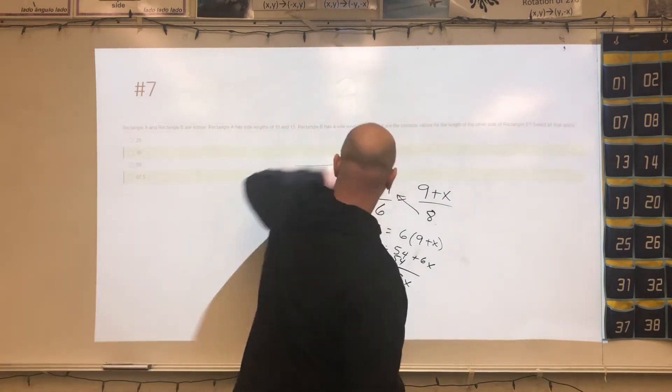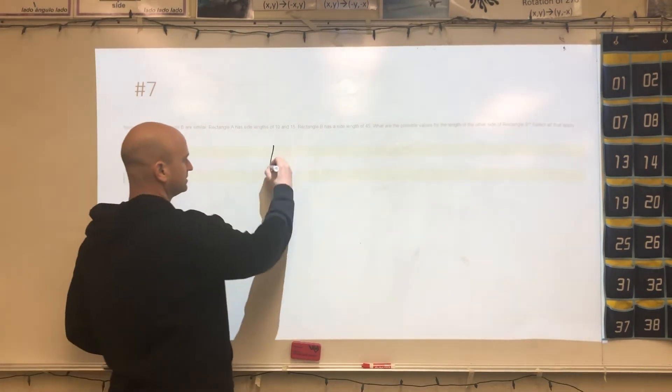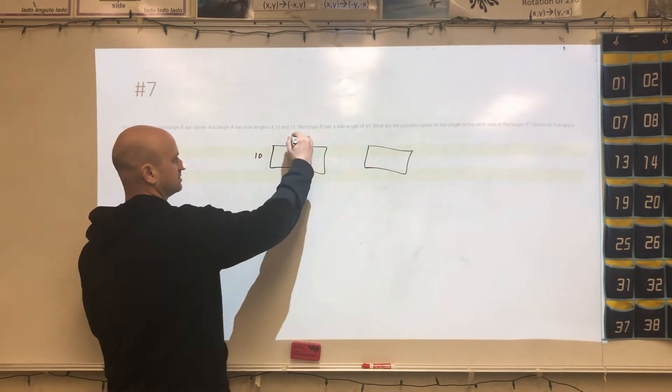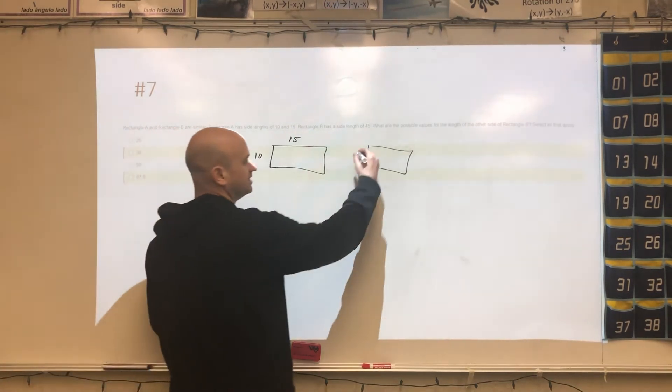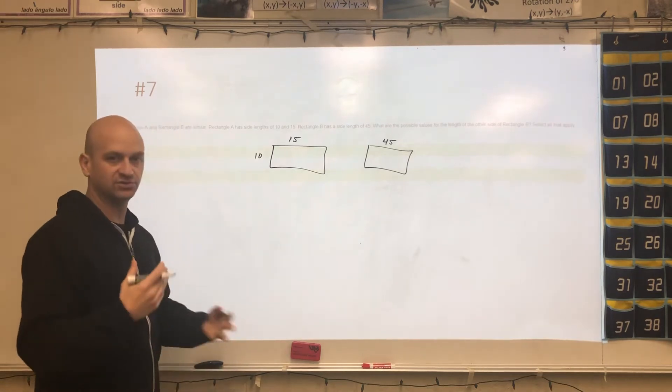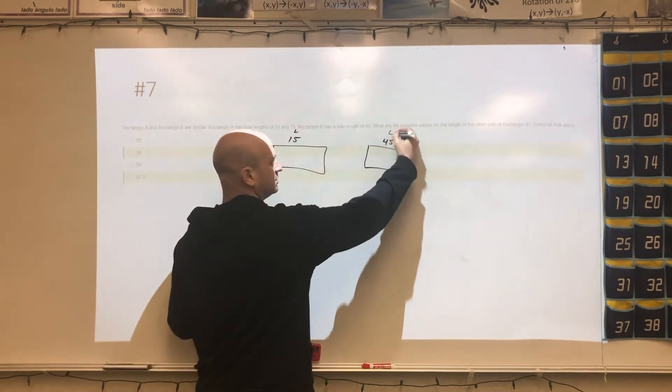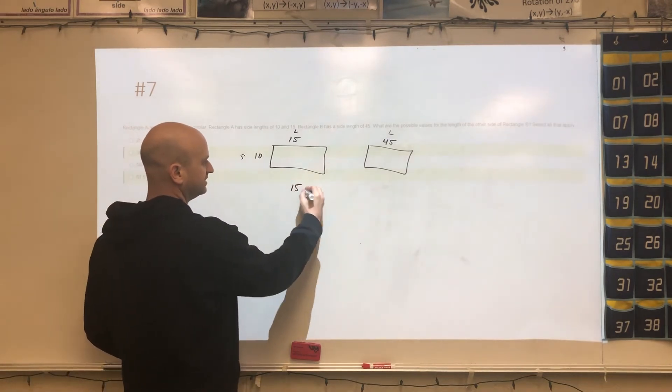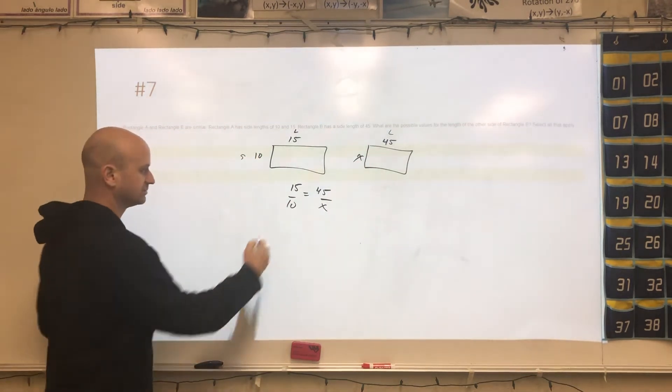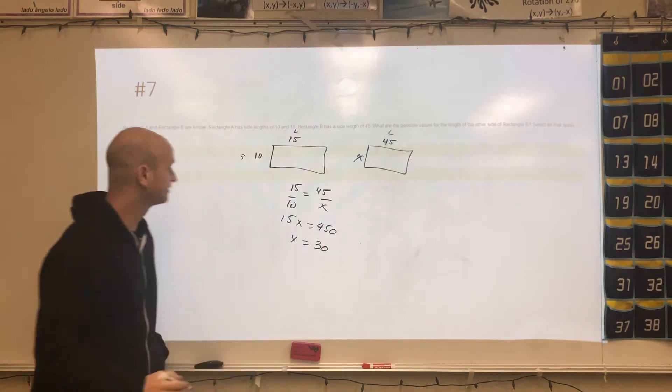All right, number seven. So we have two rectangles. Rectangle A is 10 by 15, and rectangle B has a length of 45. Now, what happens in this problem is 45 can be the short and 45 can also be the longest side. So we have to do two different calculations here. So if 45 is long, what would the value, the missing value be? So 15 would partner up with 45, and then 10 would partner up with X. So we cross multiply. I get 15X is equal to 450. X will equal 30.